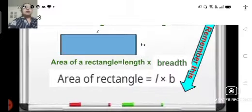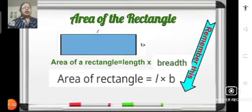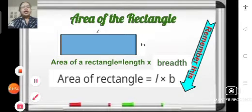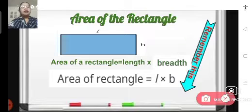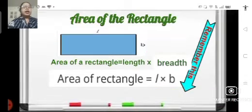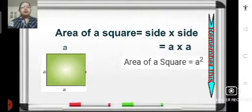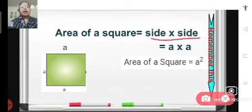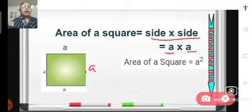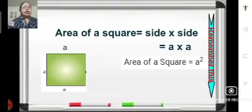Let us revise how we find the area of a rectangle. Children, we have learnt that area of rectangle is length multiplied by breadth. So if we have a rectangle with length L and breadth B, the area will be L into B. For a square, the area is side multiplied by side. If we have a square with each side A, then it will be A into A, which is A squared. This is the formula to find the area of a square if we know the side.